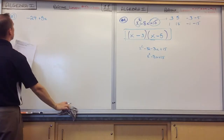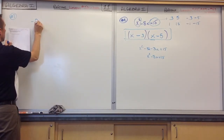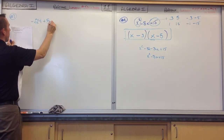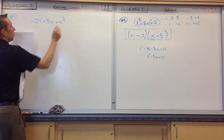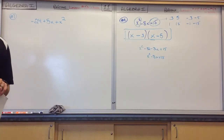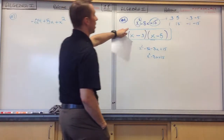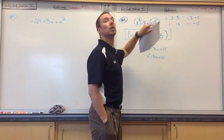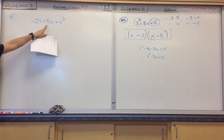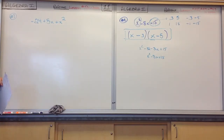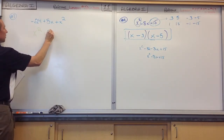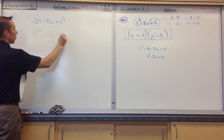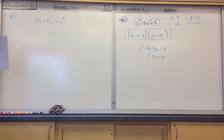Now, looking at this right now — what is different than what you've seen before? X is out of order, which means, is this in standard form? No. So in order to factor any polynomial, you need to make sure it's in standard form. So how could I rewrite this to get it into standard form? X squared plus 5x minus 24. Now I can operate like I did in the last problem.